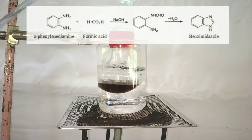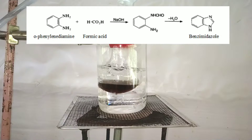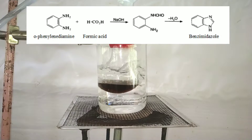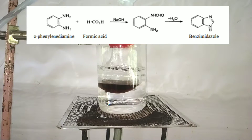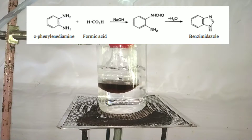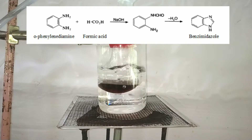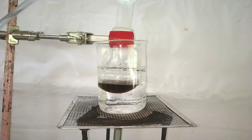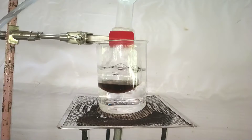What is happening here is shown in the reaction. The formic acid condenses with the amine group of ortho phenylenediamine forming an intermediate with an NHCHO side chain. In the next step there is elimination of a molecule of water forming the benzimidazole. It is highly soluble in acidic medium, hence it remains in the solution.